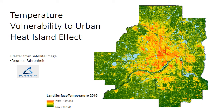Next, I wanted to see what neighborhoods were the hottest. I used data from the Metropolitan Council that had a raster from a satellite image showing land surface temperature in degrees Fahrenheit. In essence, this map shows how hot the ground was to touch at any given location. Again, notice the red in the center of the map, illustrating higher temperatures in the urban part of the metro.